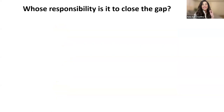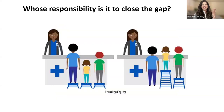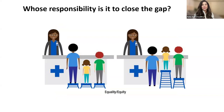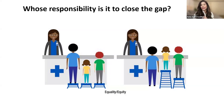Whose responsibility is it to close the gap in an equitable manner? Is it one organization? There are a great number of historical and contemporary injustices that these patients are facing. This guided us to partner with many community partners, because this is not just one organization's job — different organizations need to bring their strengths together, synergize, and impact this in a meaningful and equitable manner.